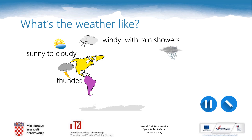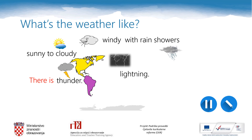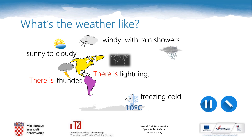Note that so far we have said: It is windy. It is sunny. It is cloudy. But when talking about thunder, we say: There is thunder. Similarly, there is lightning. And it can be freezing cold. You can pause this video lesson now and write the words in your notebooks.